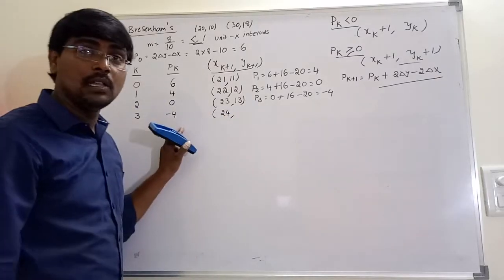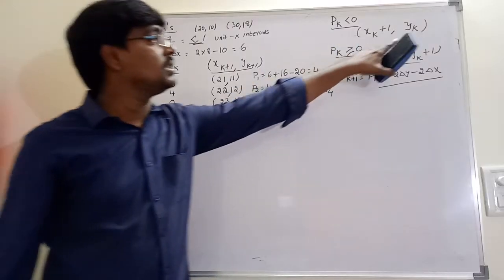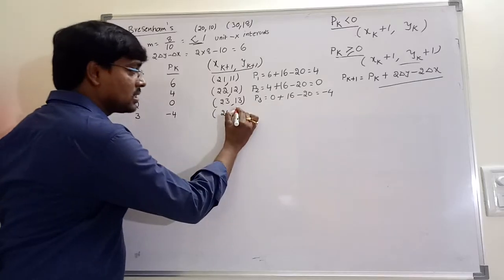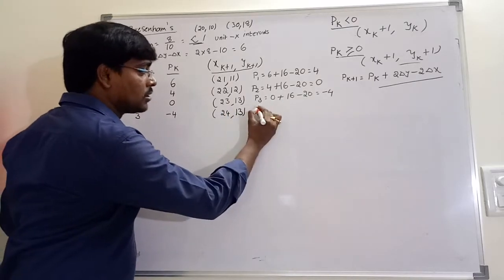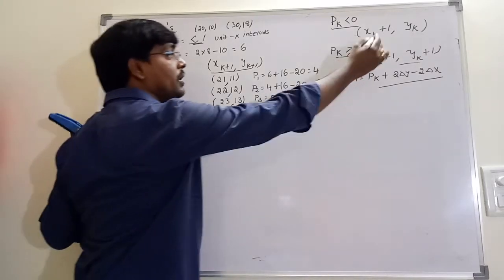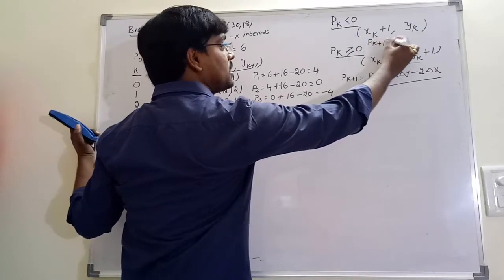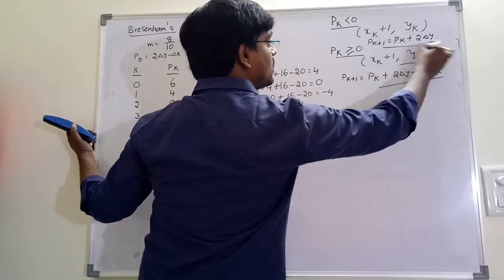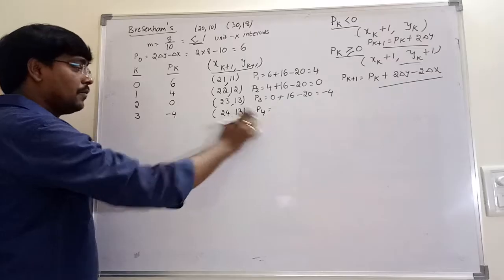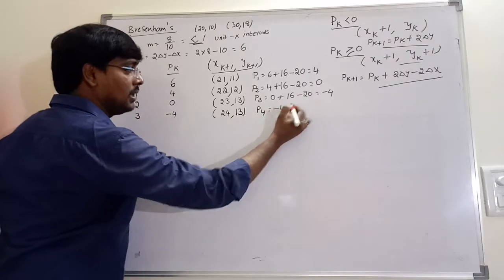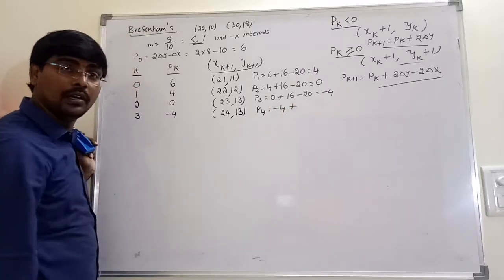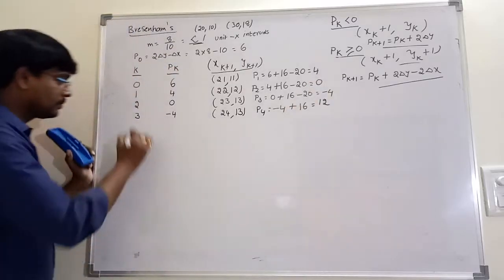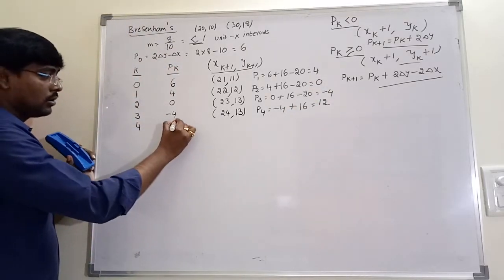P3 is less than 0. When pk is less than 0, yk+1 becomes yk, meaning y value stays at 13. For p4, when it is less than 0, pk+1 equals pk plus 2 delta y. So p4 equals p3 plus 2 into delta y, that is 16. The value is minus 4 plus 16 equals 12.